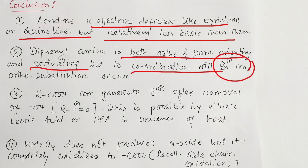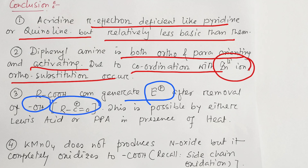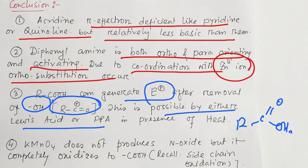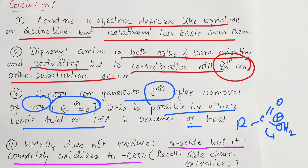Key points: diphenylamine is ortho-para orienting and activating; due to chelation with Zn²⁺, ortho substitution occurs selectively. Carboxylic acid generates an acylium cation (after removal of OH) via Lewis acid or polyphosphoric acid. Heat is needed for the elimination step. KMnO₄ does not produce N-oxide but completely oxidizes to carboxylic acids via side-chain oxidation. That is the end of the discussion — thanks for watching.